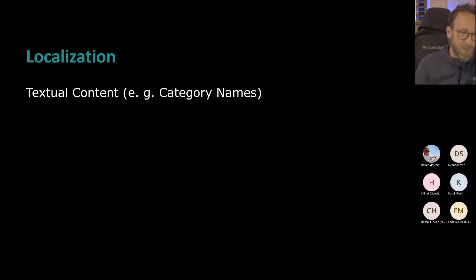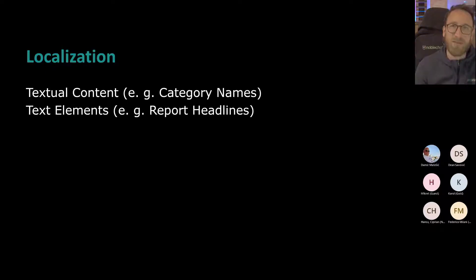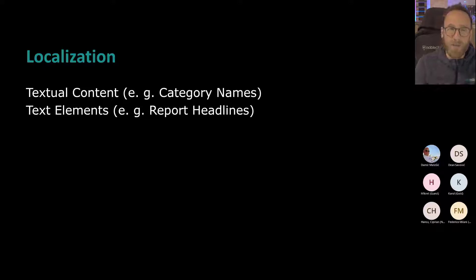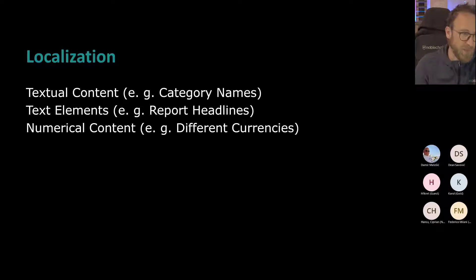So, localization — what does this mean? If you ask me, there are four things to think of. One is the textual content, like category names: red, blue, chair, house — the content of our data. The second thing is all the usually hard-coded text: titles, page names, legend, axis — whatever. Third is numerical content — maybe you want to report the numbers not only in euros, but also in Russian Crown or US dollars.